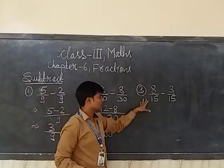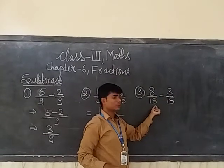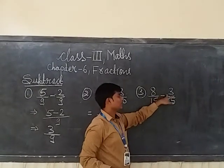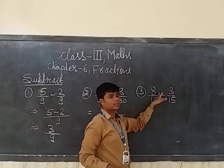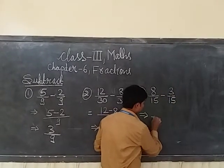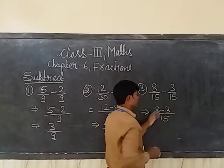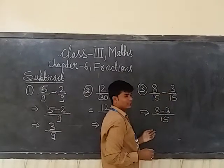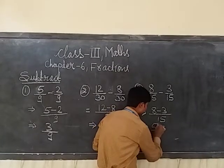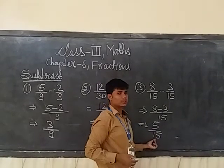The last question is 8 by 50 minus 3 by 50. Here also, the denominators are same. So we have to simply subtract the numerators of the given fraction. First, we have to write the denominator, and after that subtract the numerators. 8 minus 3 is 5, and below it we have to write the denominator.